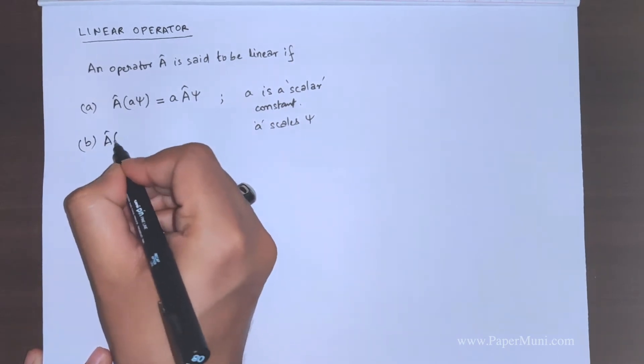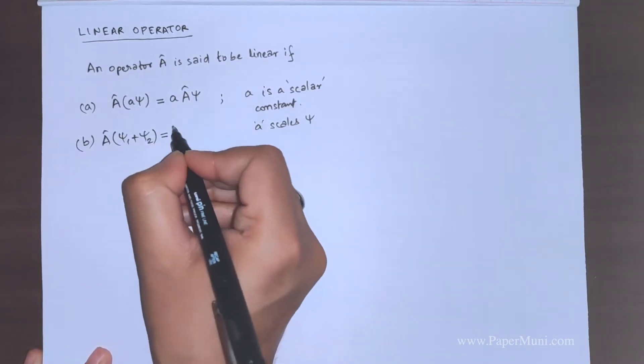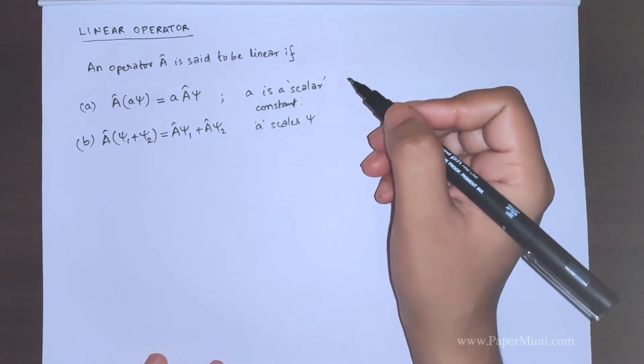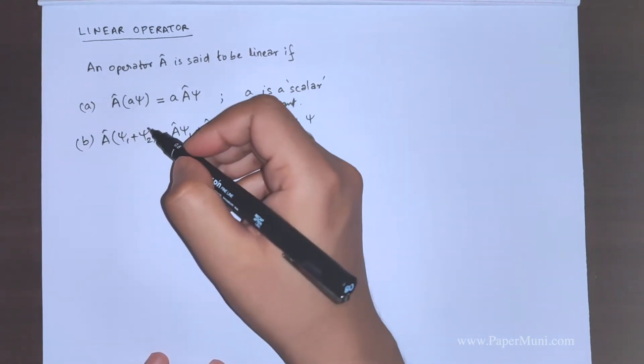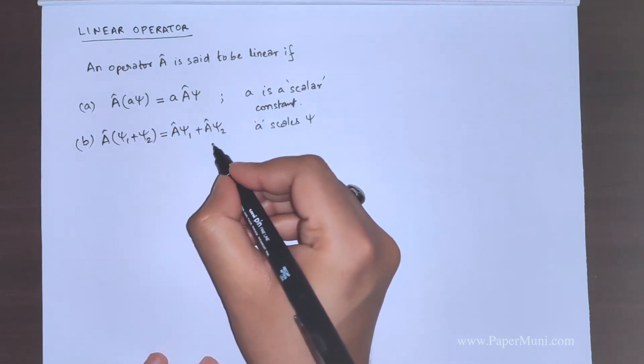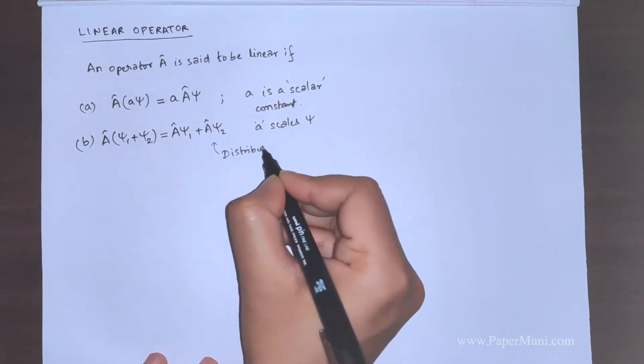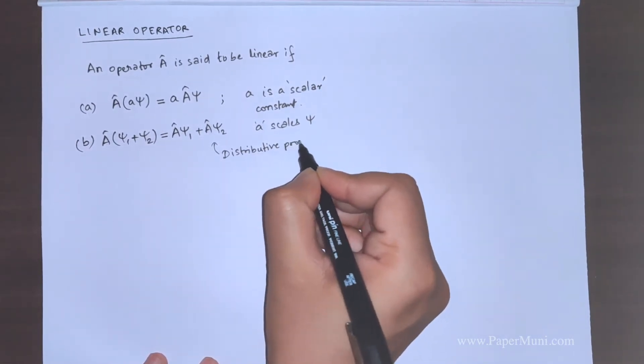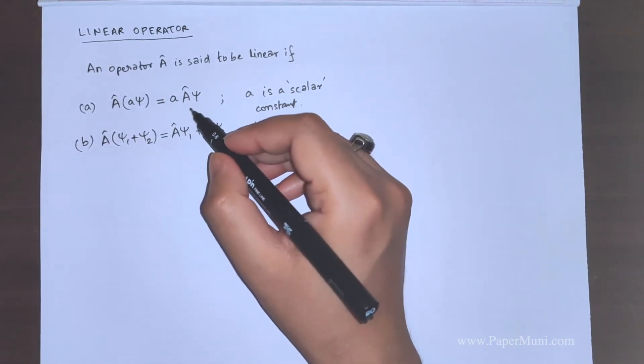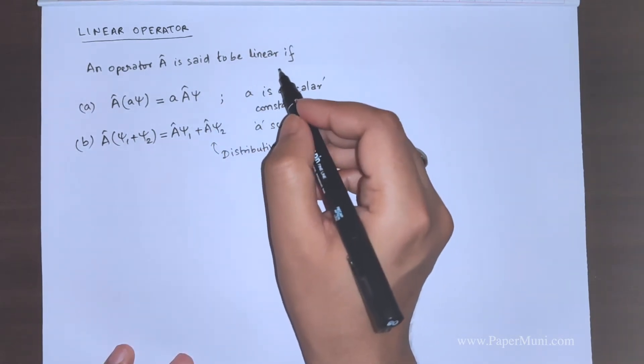Now, operating A on psi 1 and psi 2 equal to A psi 1 plus A psi 2. So, this is the distributive property of the operator.